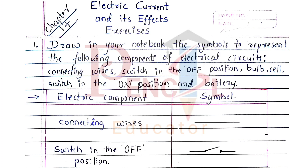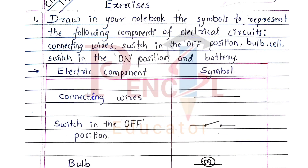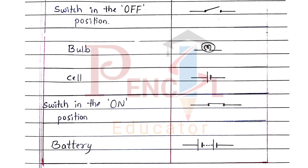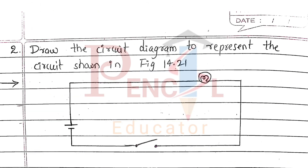First one, draw in your notebook the symbols to represent the following components of electric circuits: connecting wires, switch in the on position, bulb, cell, switch in the off position and battery. Components of electric circuits and their symbols have been given in the table.